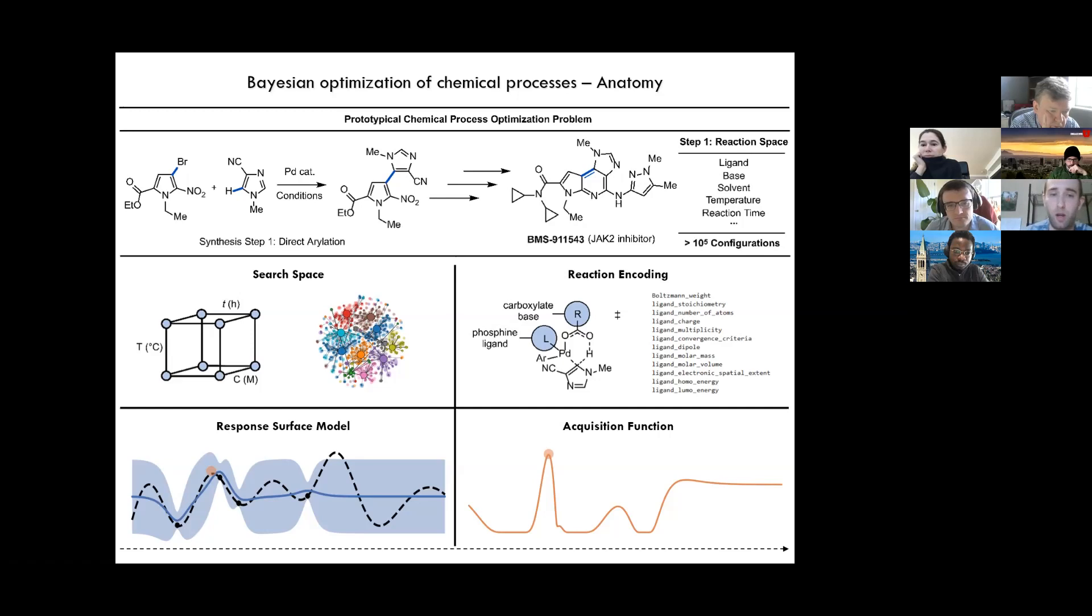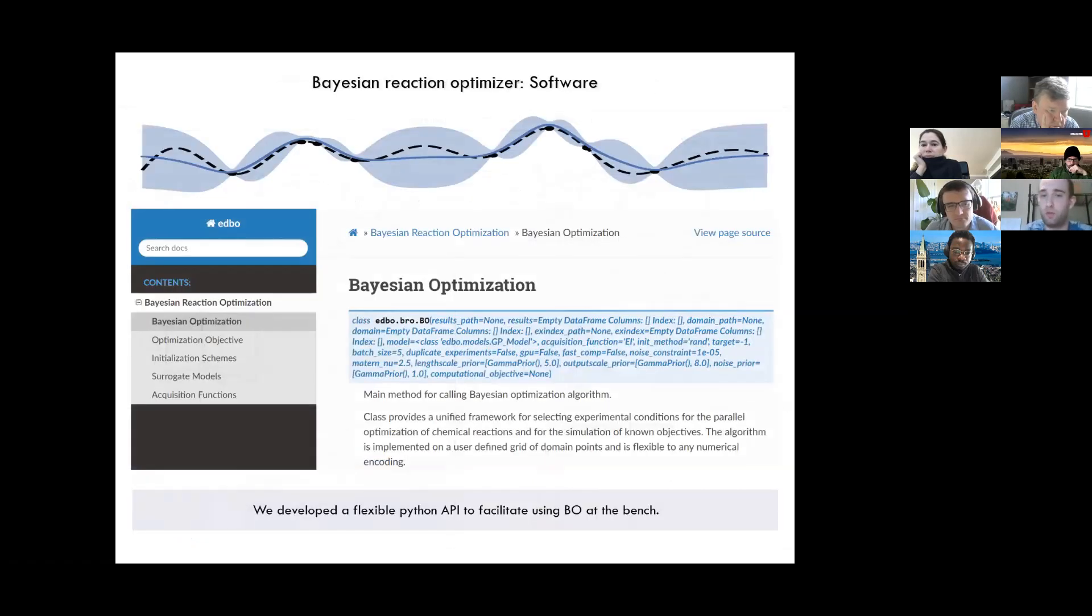And basically, we've, in a recent paper, we've done all of those things, and we are releasing a software that we're calling EDBO or experimental design via Bayesian optimization, which kind of wraps up all of these sub-problems into a convenient API that synthetic chemists can use for optimizing reactions. And the next part of the talk is going to be about how we can apply EDBO to a real chemical process optimization.